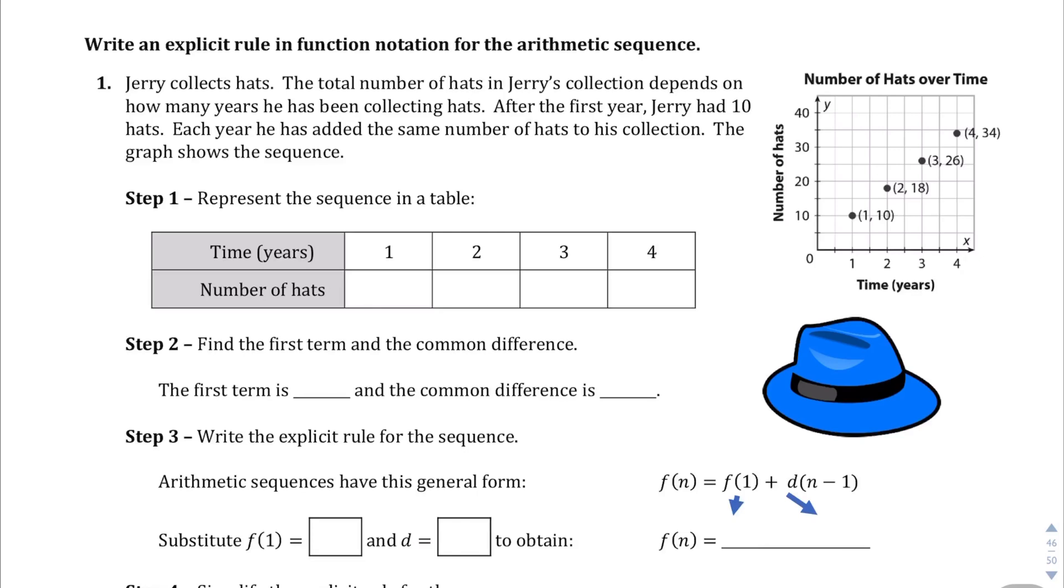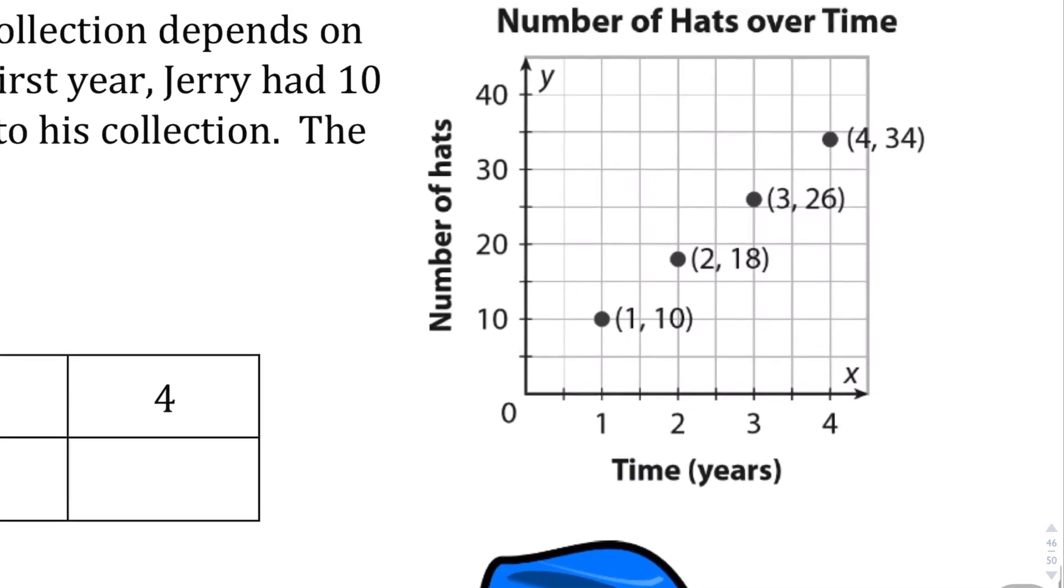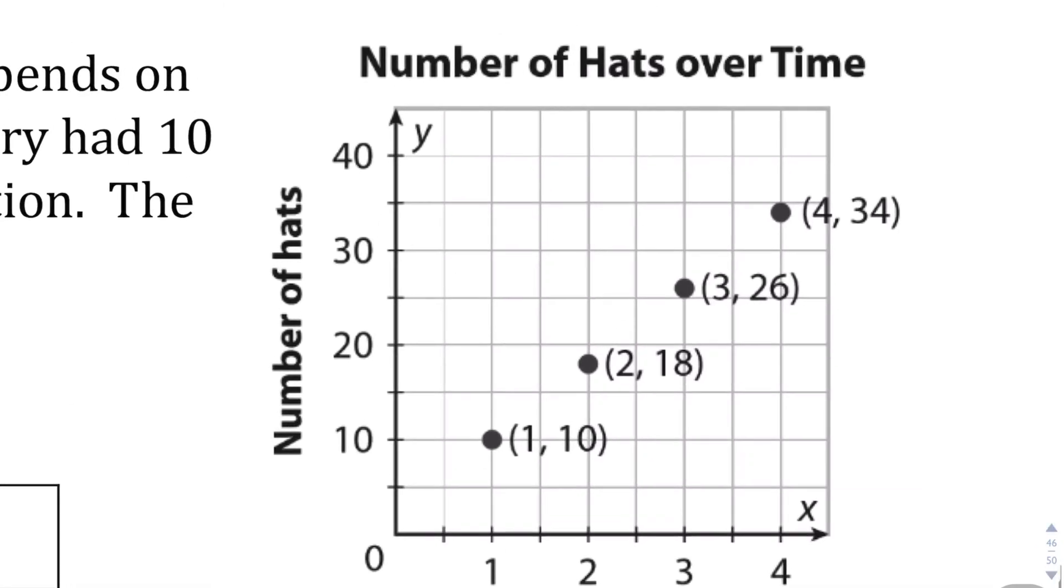Question number one, we have a context of Jerry collecting hats. The total number of hats in Jerry's collection depends on how many years he has been collecting hats. We're told that after the first year, Jerry has 10 hats. Let's try to figure out how many hats he's increasing by each year. After the first year, we're at 10 hats.